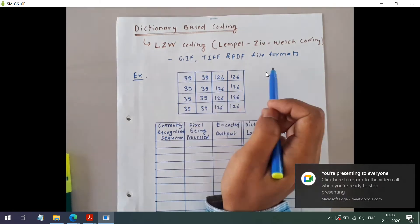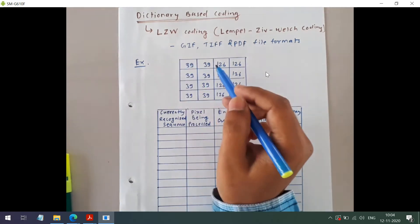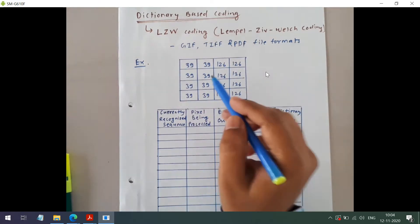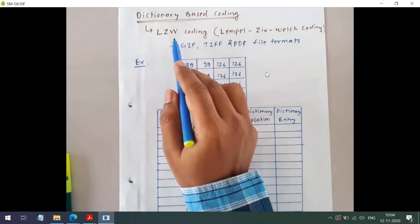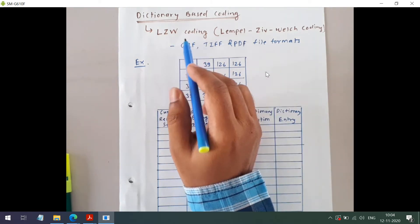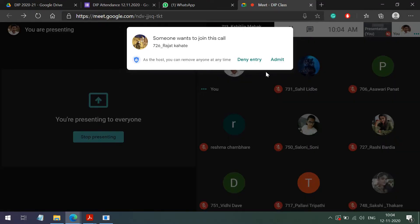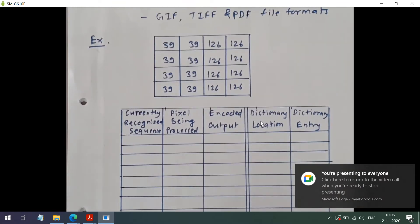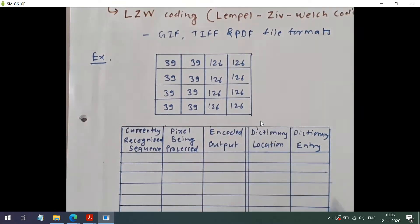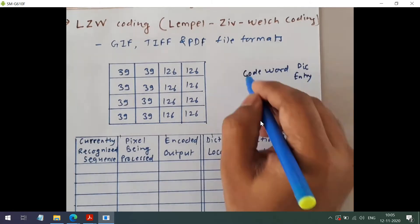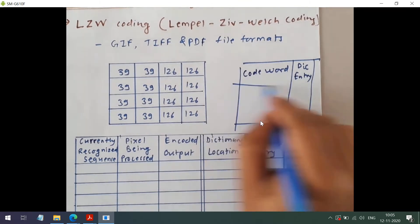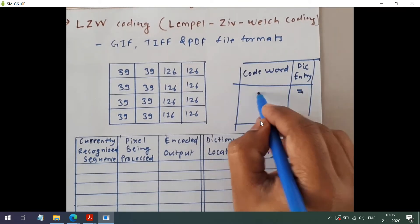We are going to study this coding through one example. Consider a given image on which we have to apply LZW coding. This coding is used for compression, and we will see the compression ratio after applying this coding technique. LZW coding comes under dictionary-based coding, so we have to maintain a dictionary where we will have entries for codewords and corresponding dictionary entries. When we recreate any image, we will refer to this dictionary entry for the corresponding codeword.